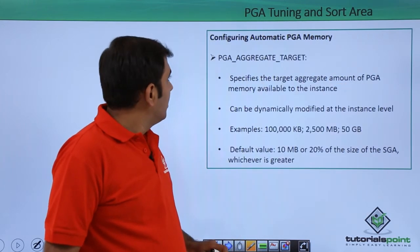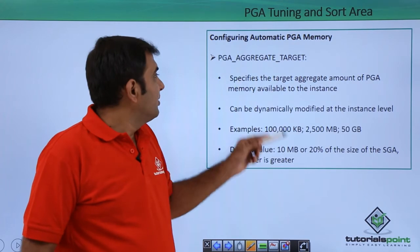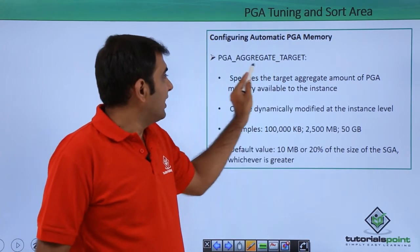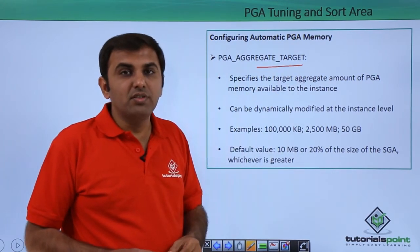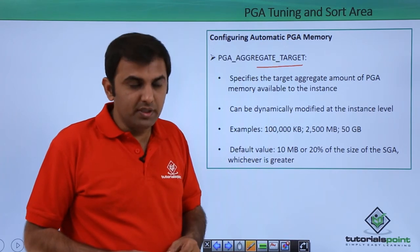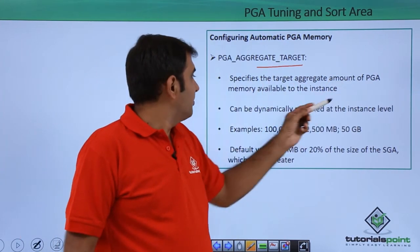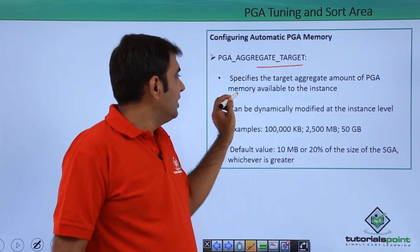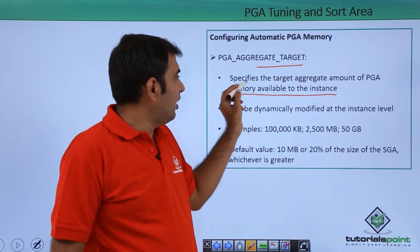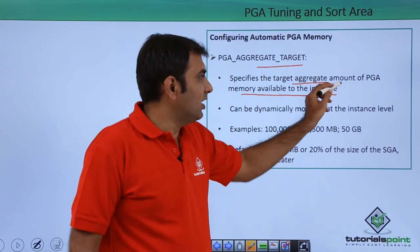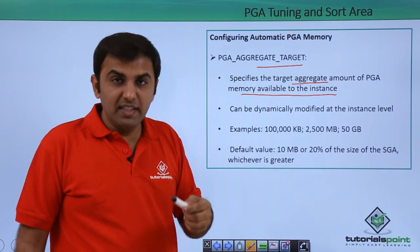Next, configuring the automatic memory area: the PGA aggregate target is a key parameter. Using this parameter you can set up the size of your PGA. It specifies the target aggregate amount of PGA memory available to the instance.